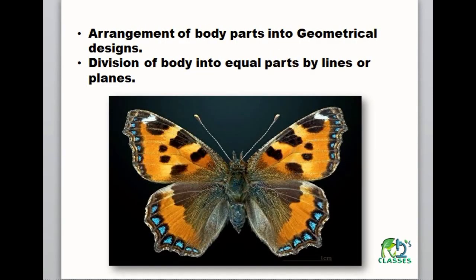Symmetry — we will know that the animal has a geometrical design. Body parts have a specific arrangement. The arrangement of body parts into a geometrical design is the division of body into equal parts by lines and planes.